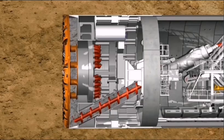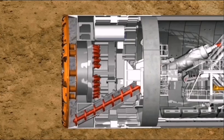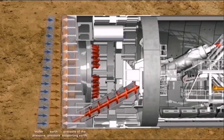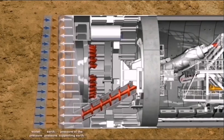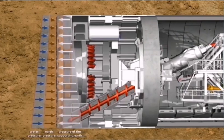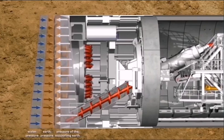For shield tunneling in non-stable soils, a loss in stability at the tunnel face is compensated by creating a support pressure. In the case of the earth pressure balance shield, the soil which was excavated by the cutting wheel is used to support the tunnel face.